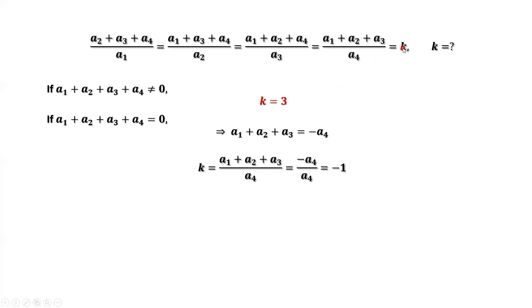K equals A1 plus A2 plus A3 over A4. From this result, if it is 0, we have this result. We replace the numerator by negative A4. Negative A4 divided by A4 equals negative 1.